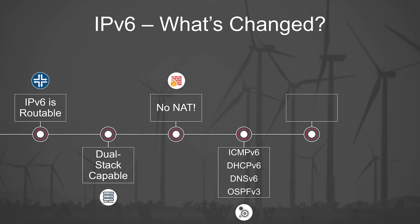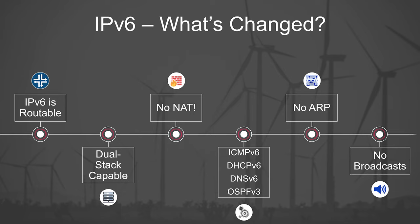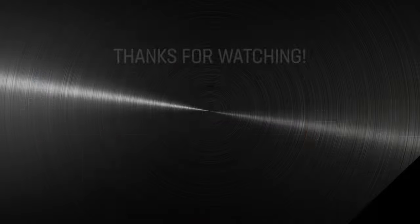An interesting one is ARP, the Address Resolution Protocol — it's gone. It has been replaced by NDP, the Neighbor Discovery Protocol, and we'll definitely be looking at that one further. Finally, I want to mention broadcasts: there are no broadcasts anymore. Broadcasts really weren't that efficient. Now with better protocols like NDP, everything can be done with multicast messages — and you better believe that we'll be looking at those too.